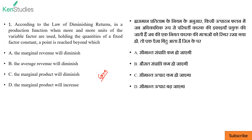So first, according to the law of diminishing returns in a production function, when more and more units of variable factors are used, holding the quantities of a fixed factor constant, a point is reached beyond which — what happens if we produce with two factors, one fixed factor and one variable factor. In the fixed factor, what happens: your building, plant, machinery — for example, a machine has a capacity of 3,000 units production. Every week you have to produce 10,000 units. But if you produce one unit or up to 10,000 units, the fixed cost is the same.